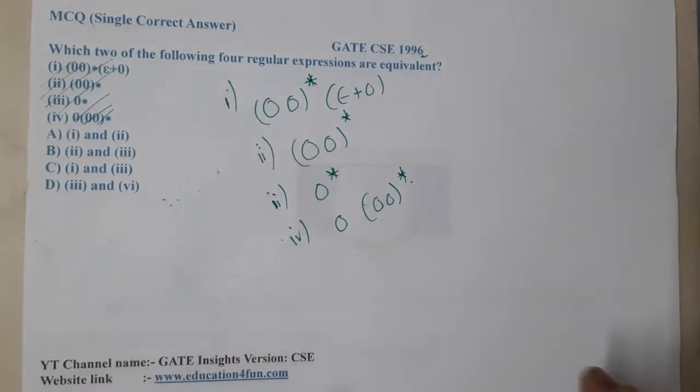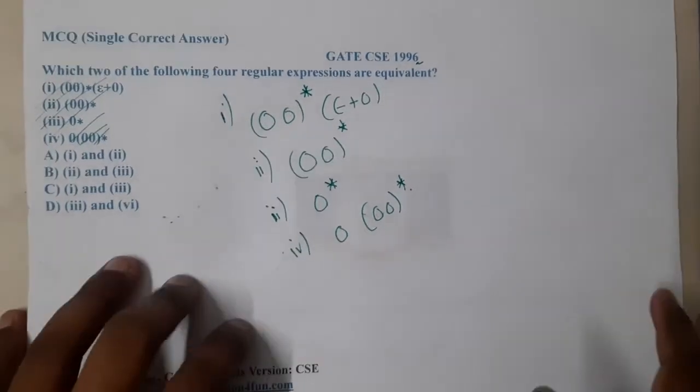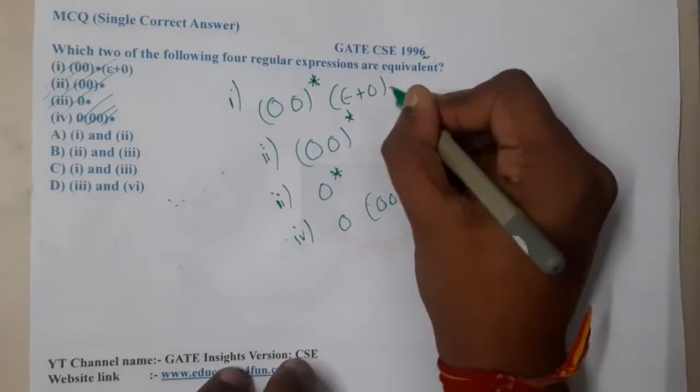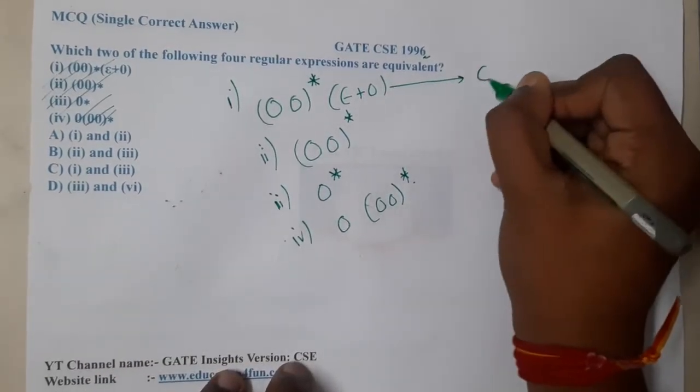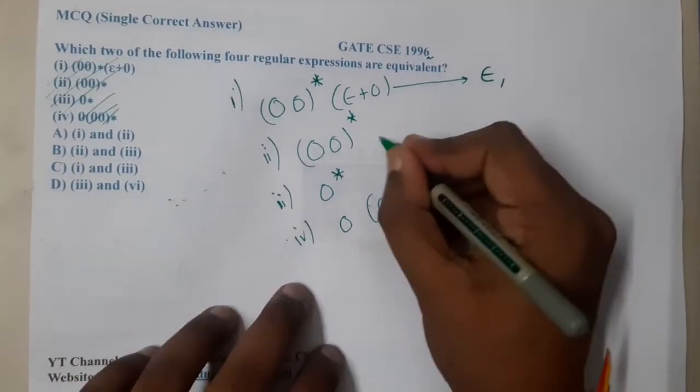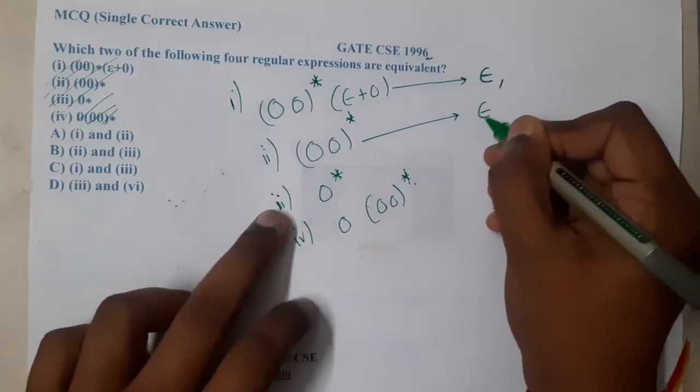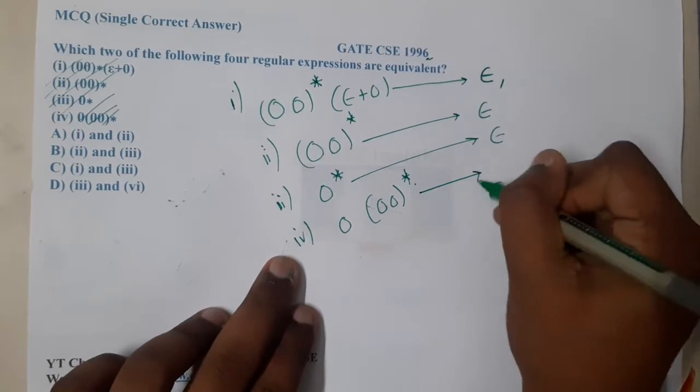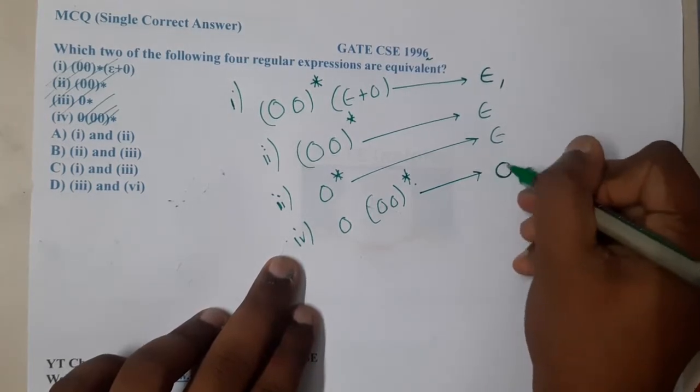When we are working with respect to options, please concentrate. Option A: what is the minimum item which we can generate? In option A we can generate epsilon, that's the minimum item. In option B also I can generate epsilon. In option C here also I can generate epsilon. But when it comes to 4, the minimum value is 0. So indirectly this is not similar to any one of them.